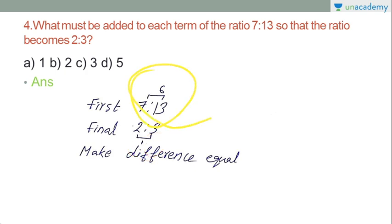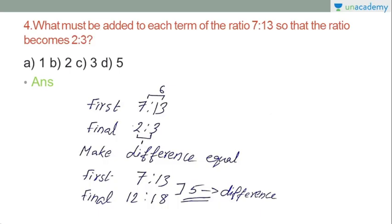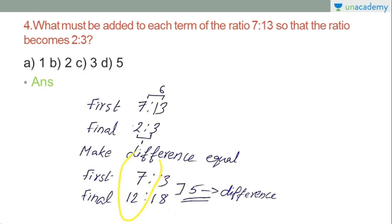The difference between the two terms of ratio 2:3 is 1. We wrote two terms in the second ratio. The gap in the first ratio is 6. So 2 into 6 is 12 and 3 into 6 is 18. The gap between 7 and 12 is 5, and between 13 and 18 is 5. So the answer is 5 must be added. The difference is 5.